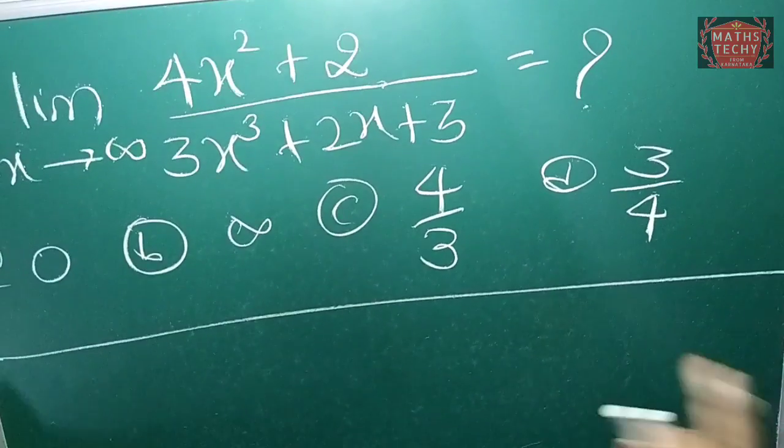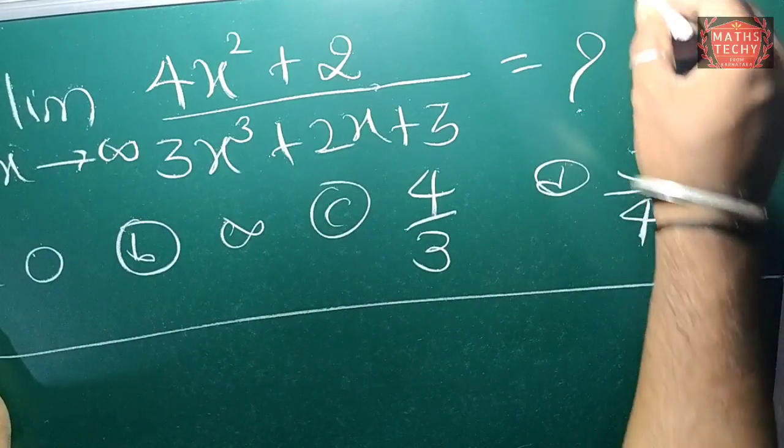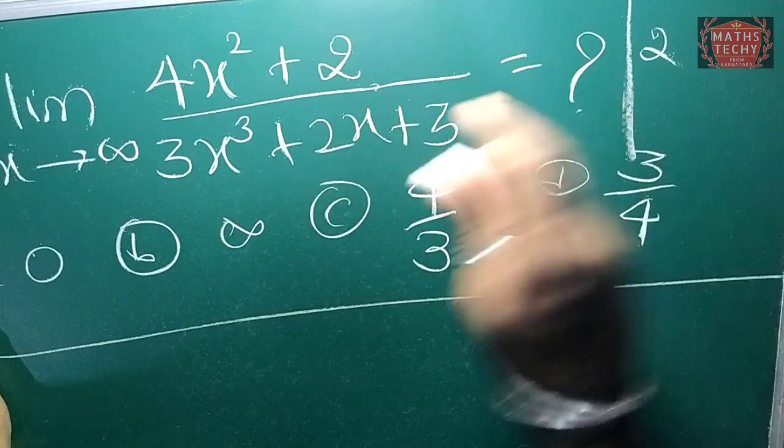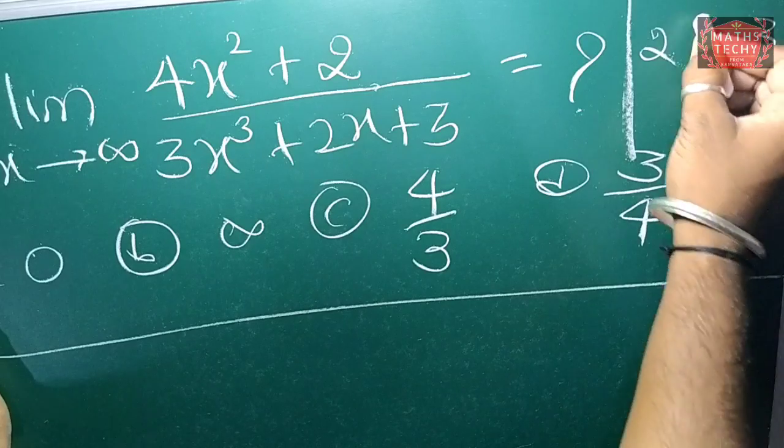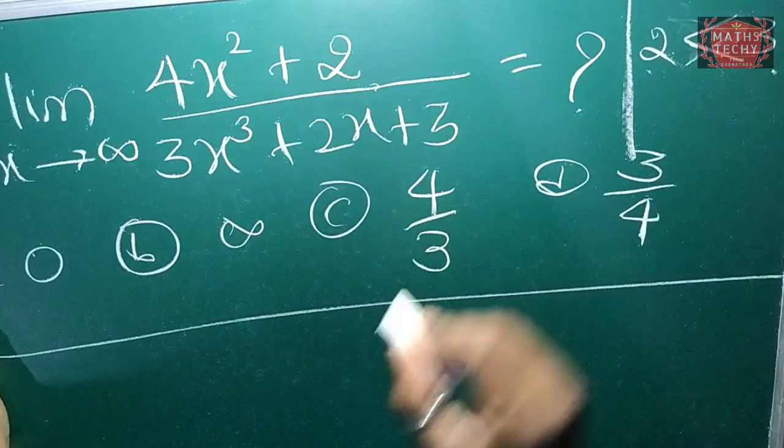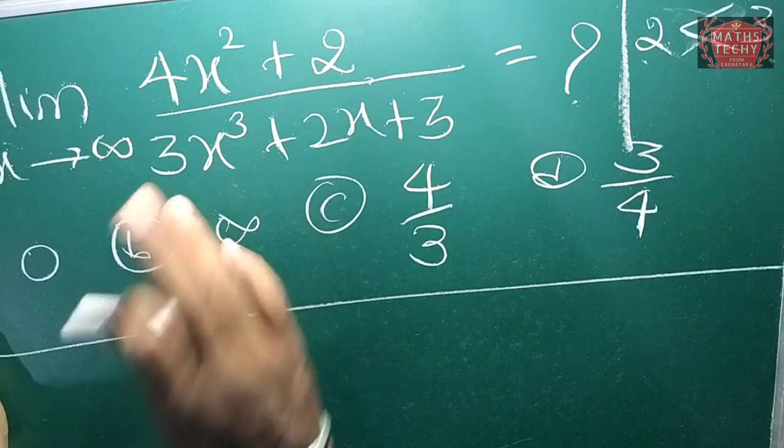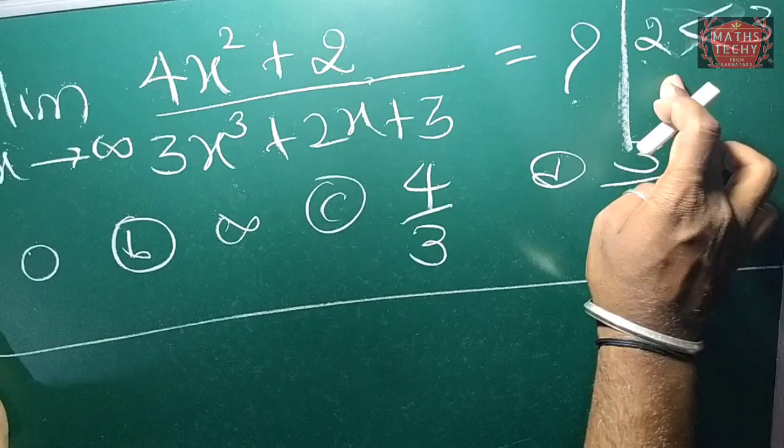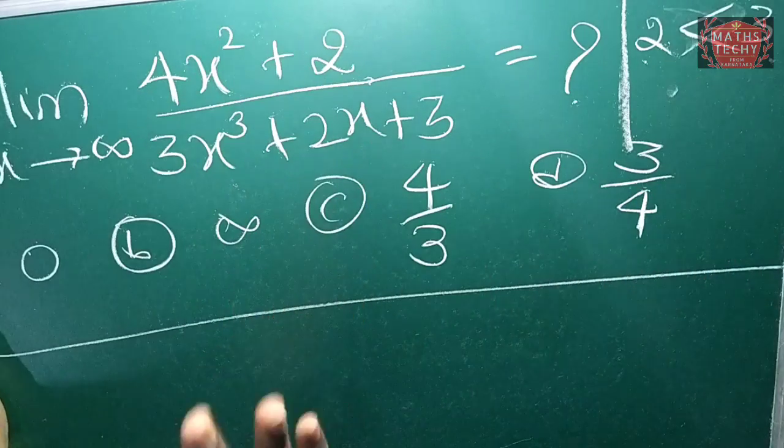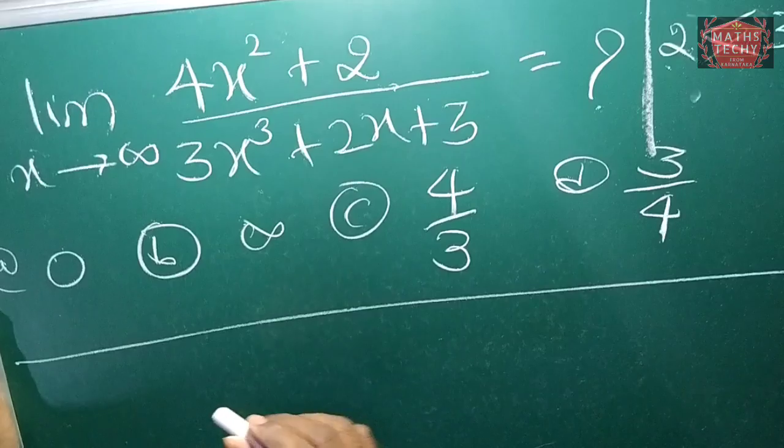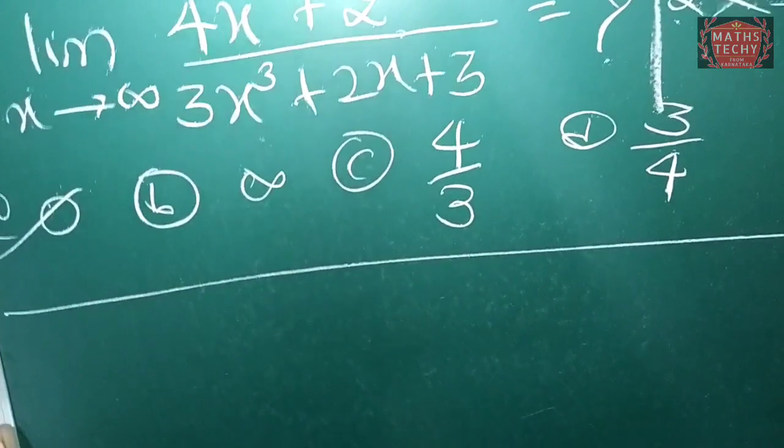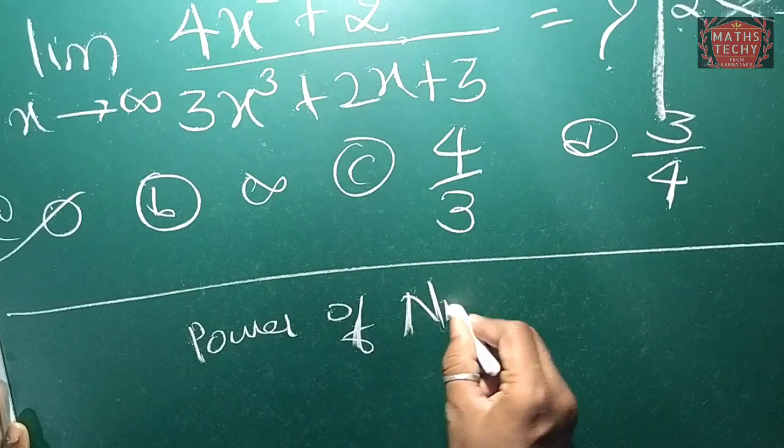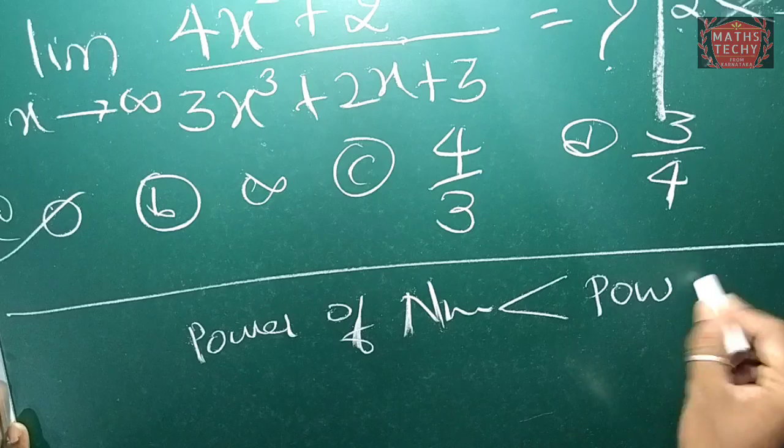Compare the numerator and denominator powers. The numerator is 2, the denominator is 3. So the numerator is less than the denominator. The power of the numerator is less than the power of the denominator, so the answer is zero.